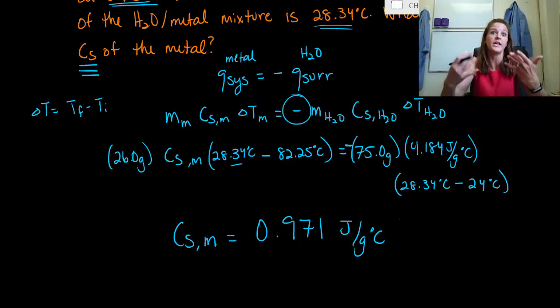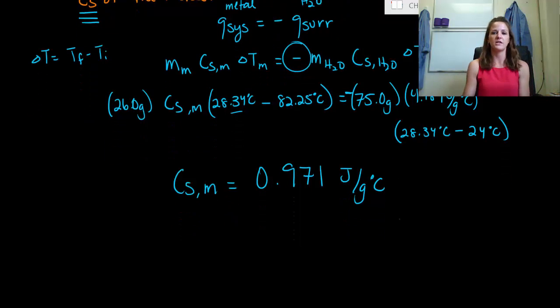Now, if I was really evil, I would give you a chart of specific heats of the metal and say, identify this metal. What is that unknown metal? And you'd be able to look through the chart and find the one that's 0.971 and be like, oh, that's aluminum or that's potassium, whatever it is the metal is that I've happened to choose. Alright. So let's move on to another question.